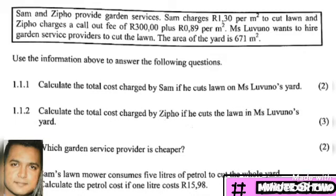If you do have access to the memos, you can follow through as I explained, or you could take down the amounts that I call out and later apply what I've explained to see if you can attempt it on your own. It becomes good practice to attempt it on your own and then verify your answer against the memo or the answers I call out.